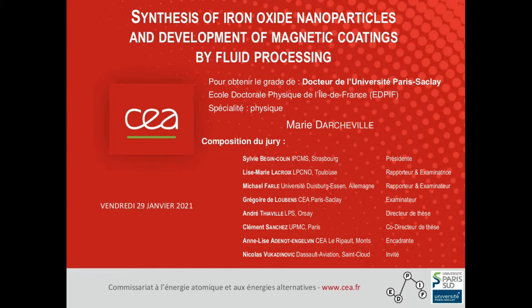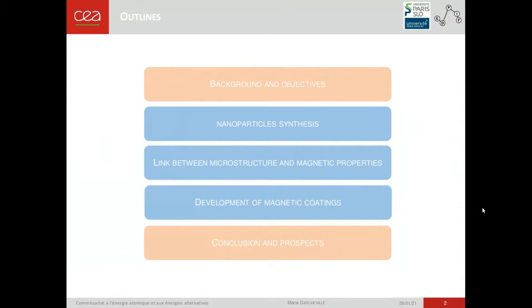At first, I will detail the background and objectives of the project. The thesis is divided in three sections: the nanoparticle synthesis, a link between the microstructure and the magnetic properties, and then the development of magnetic coatings. At last, I will present my conclusions and prospects.